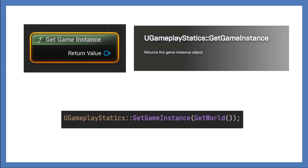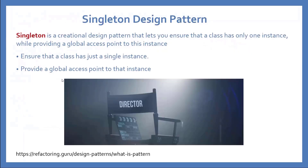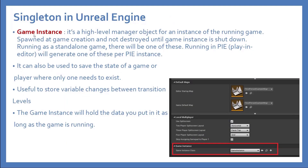Inside Unreal Engine you can get the Game Instance from everywhere. In Blueprint there is a node called 'Get Game Instance' and you can cast to your specific Game Instance and do your operations and store variables. In C++ it's part of the UGameplayStatics function library — you call Get Game Instance, pass in the world context, cast to your specific Game Instance, and store your variables.